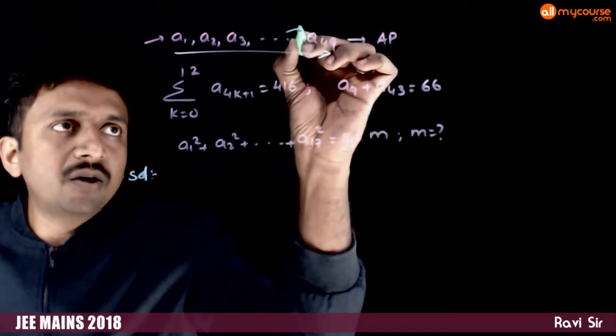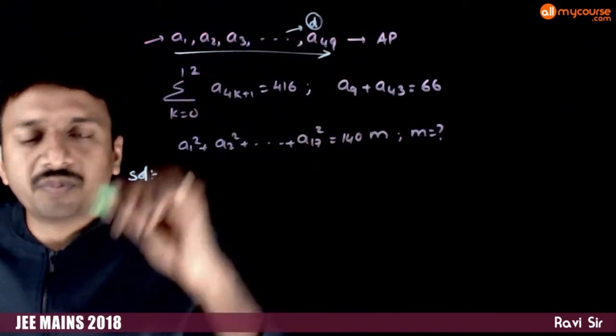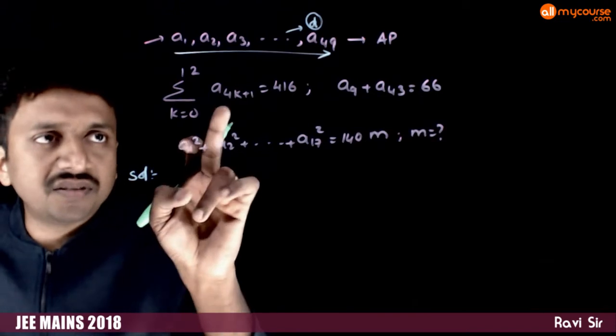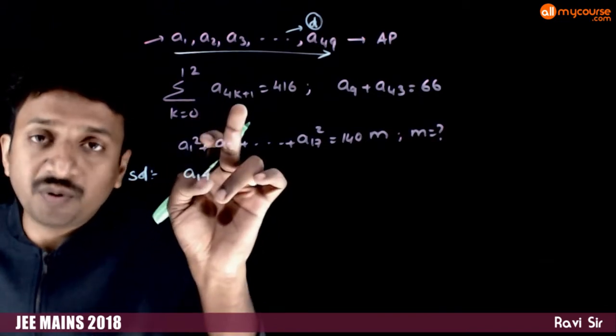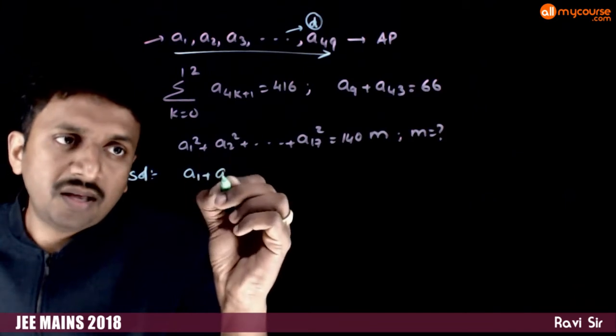Let us assume that the common difference of this progression is d. What is the meaning of this? If you put k equal to 0, you get a1, plus if you put k equal to 1, a5.